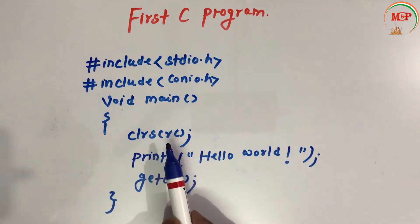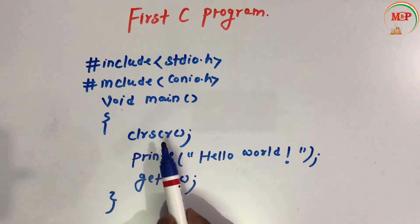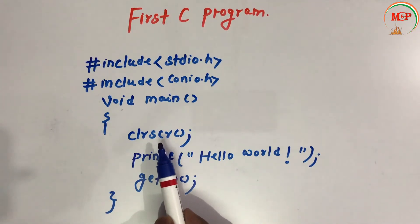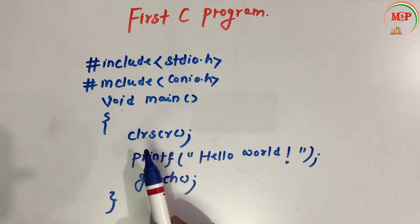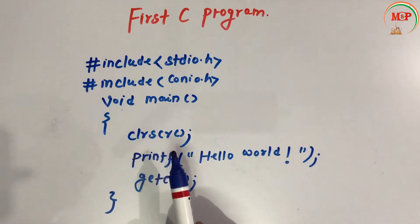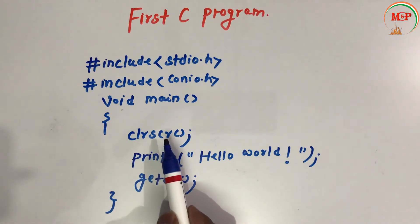clrscr() means clear the console screen. If I have previously written any message, the clear console screen ensures that the previous program's output does not mix with the current program's output. This is why I have written clrscr(), and it can be written depending upon the requirement of the program.